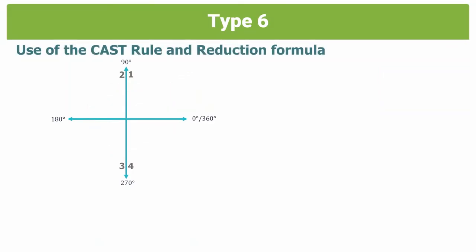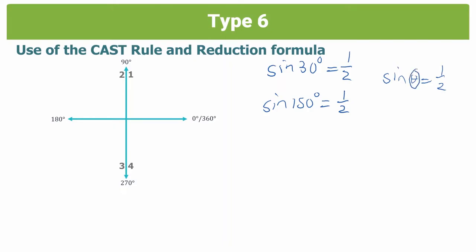In grade 11 and 12, we'll be working in quadrants 2, 3, and 4, not just quadrant 1 as in grade 10. We know that sine 30 degrees equals a half, but from our secondary special angles, sine 150 degrees is also equal to positive a half using the supplementary reduction formula. So if you were given sine theta equals a half and asked to find the value of theta, your angle could be 30 degrees or 150 degrees, and to each of these you could add 360 degrees an infinite number of times.